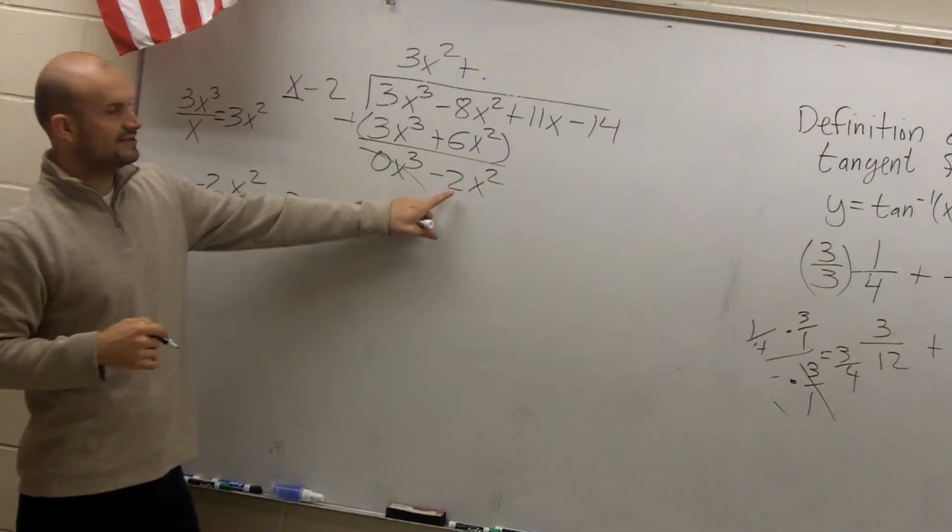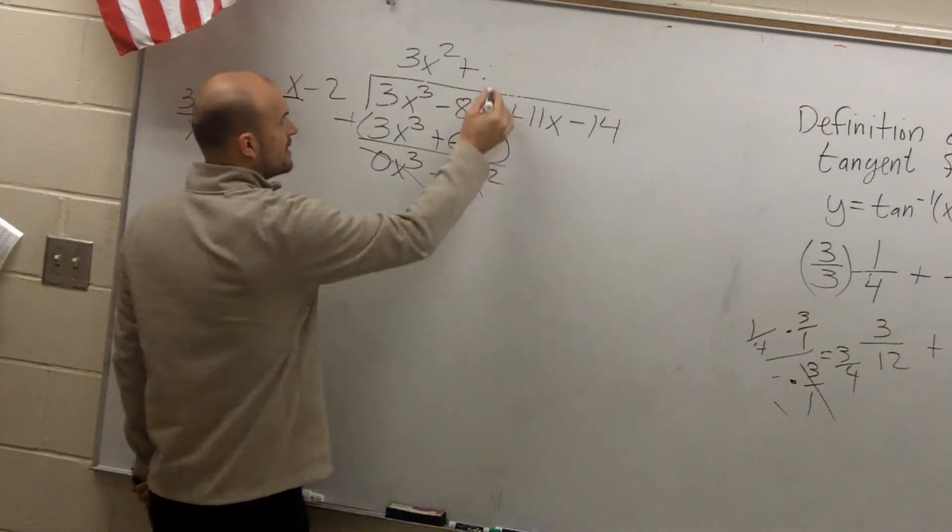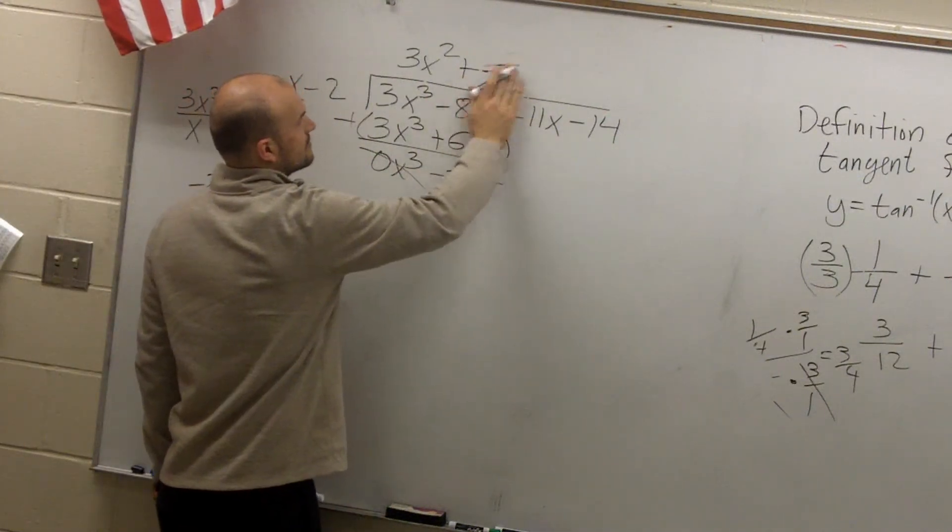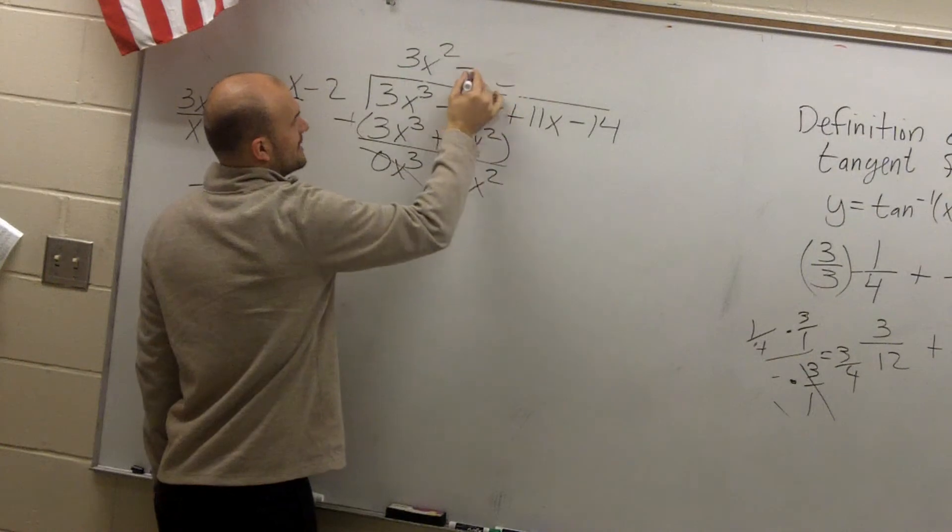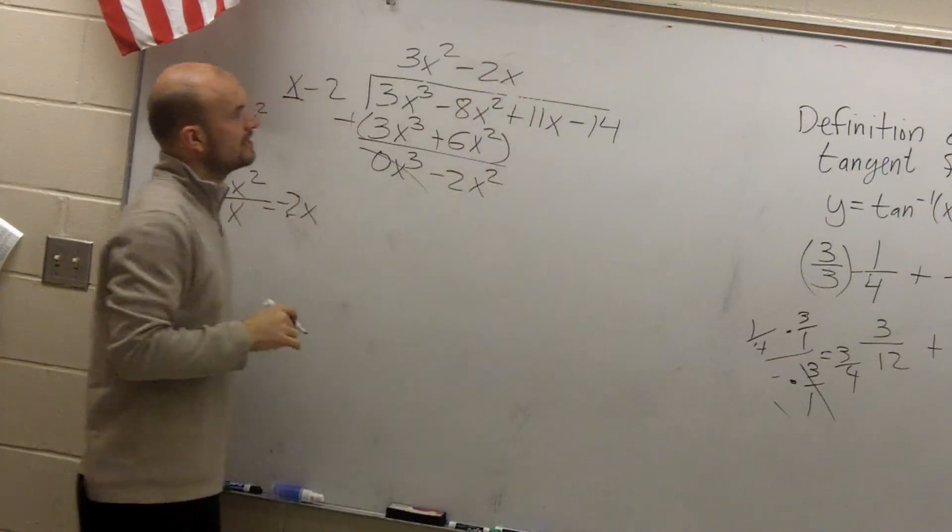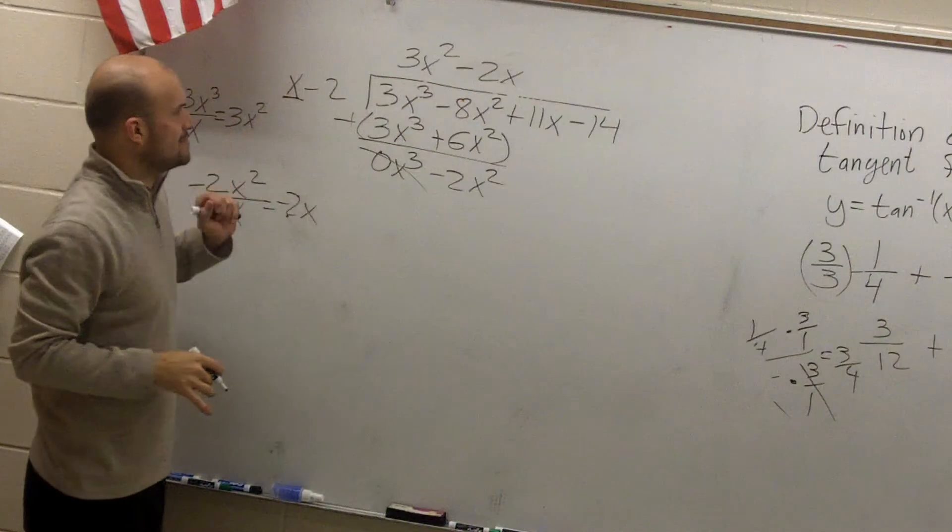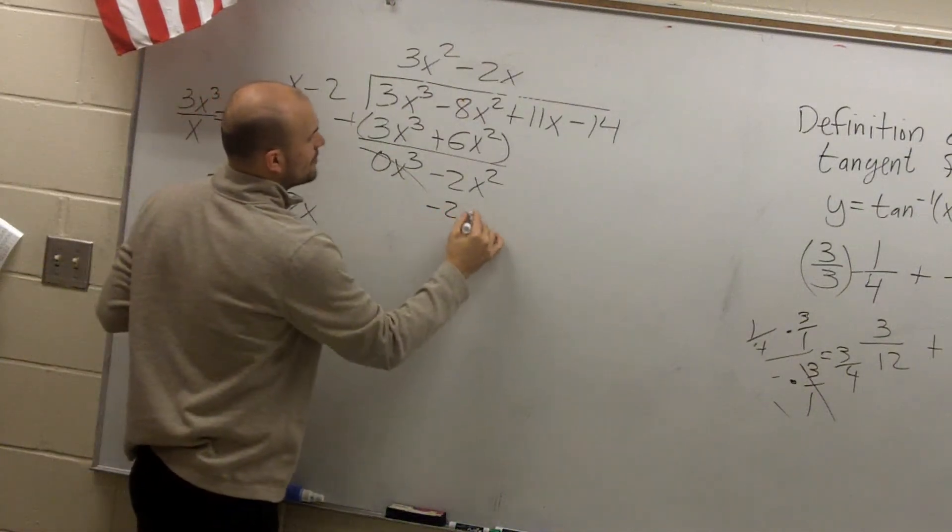So, x divides into a negative 2x squared. Negative 2x times x. Negative 2x times x is going to be a negative 2x squared.